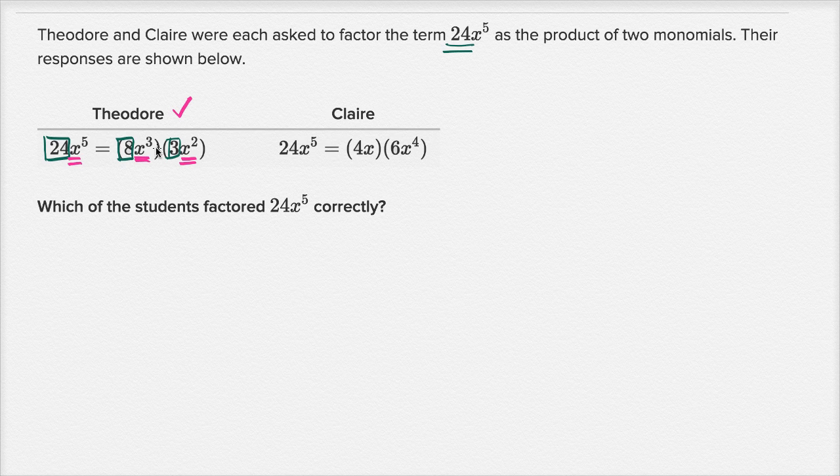So Theodore did factor it correctly. This is one factorization of 24x to the fifth. Now let's look at Claire. So Claire, if we were to take just the coefficients 4 times 6 is indeed equal to 24.